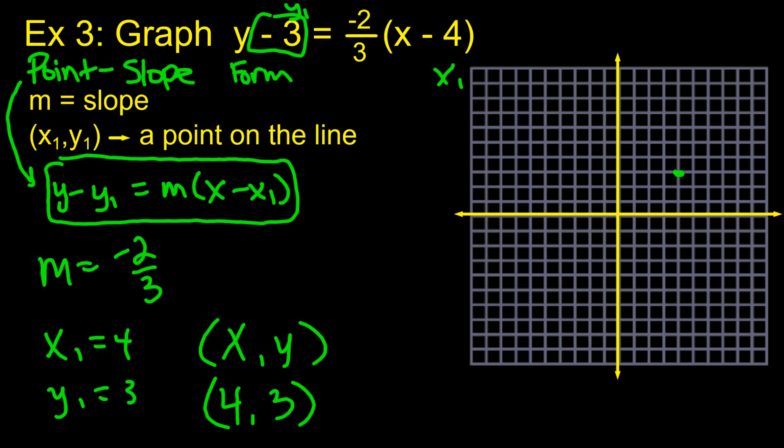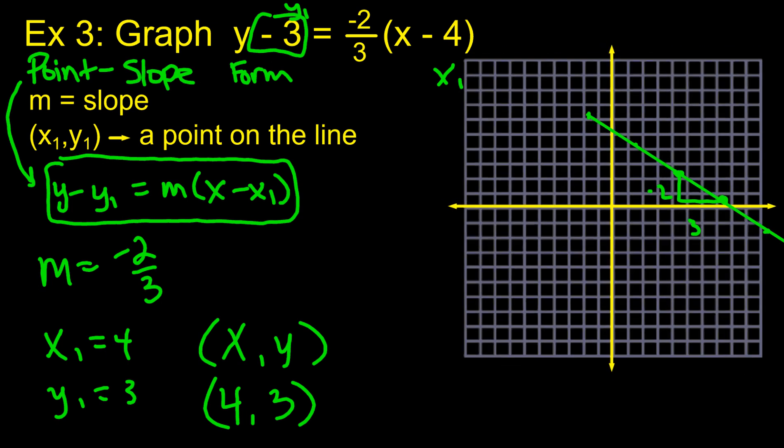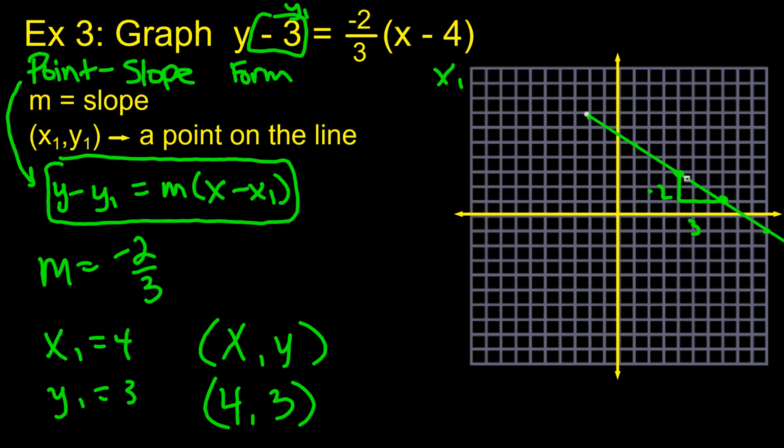And then the slope is negative two-thirds. So that means I'm going to go down 2 and over 3 and make my next point. And then over 3. Down 2, over 3, next point. And keep repeating this pattern. Back 3, up 2. Back 3, up 2. And so my line is going to go... Let's see. I'll use a nice straight line here. There we go. So we've got our line that goes through that point with the slope. You're good to go.